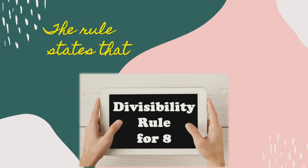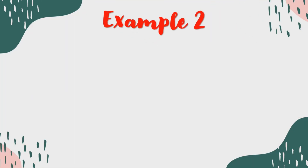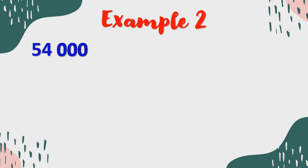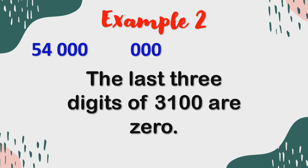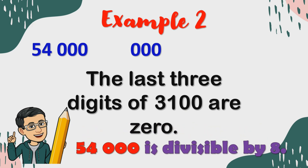Also, the rule states that a number ending with three zeros is always divisible by 8. For example, we have 54,000. The last three digits of 54,000 are zeros. Therefore, we say 54,000 is divisible by 8.